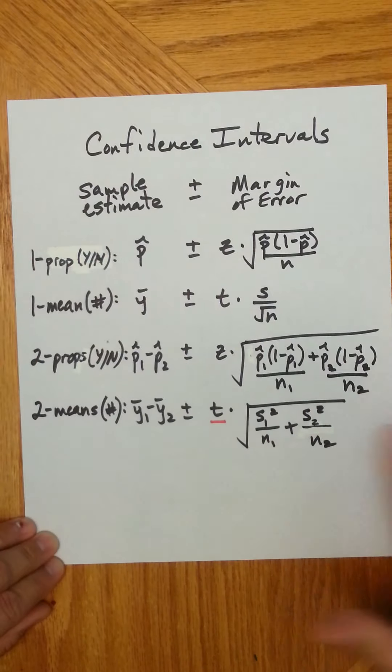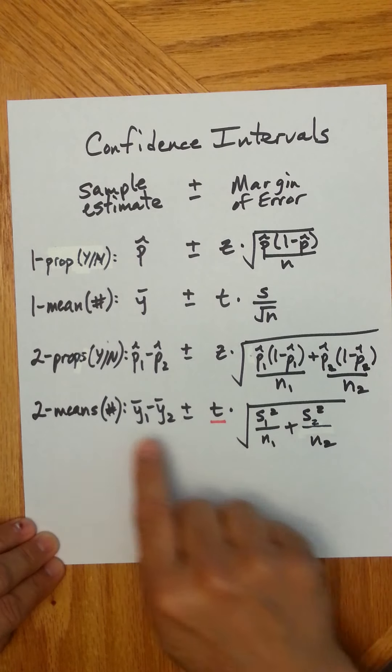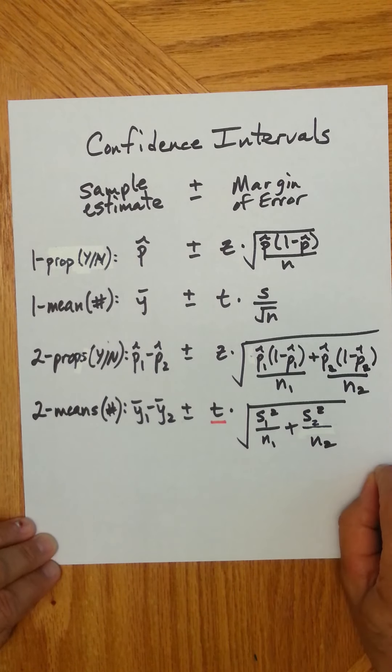But the thought process remains the same. This is how, if you're doing this by hand, you would figure out the confidence interval for the difference in two means.